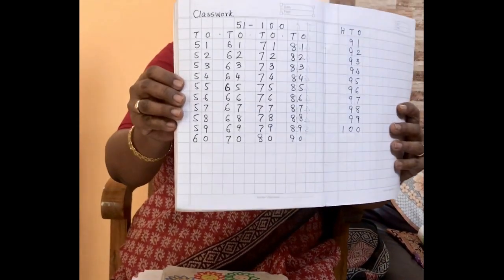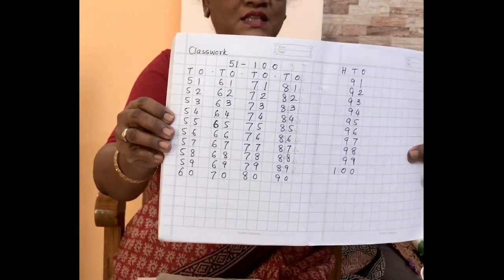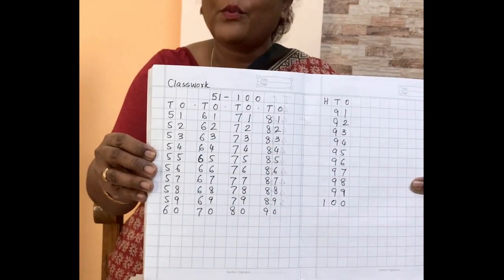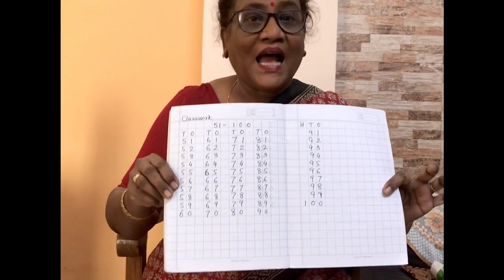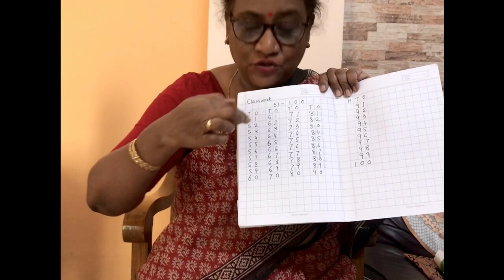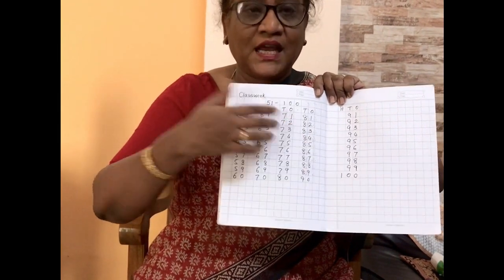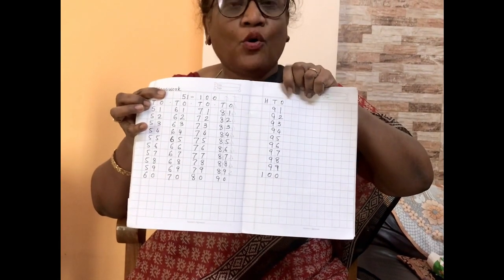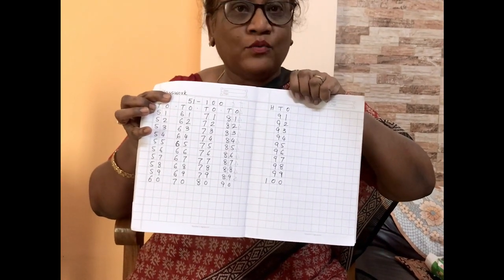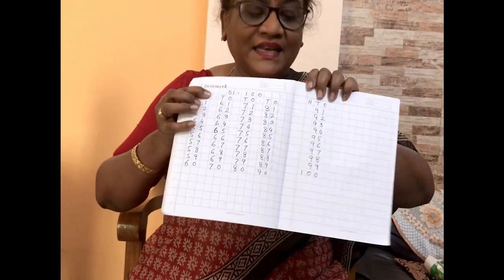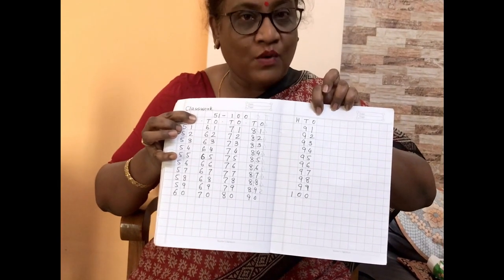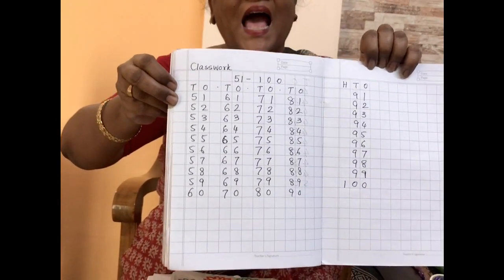Yesterday you wrote from 1 to 50. Today take out your orange copy, that is the M copy. Again you will write classwork and date, and today you will write from 51 to 100. Just follow how Miss has written — you will write it in columns, 10 numbers in each column. The last column is HTO — that is hundreds, tens and ones. The TO is tens and ones, and HTO is hundreds, tens and ones. Please write it the way I have written, and in pencil.